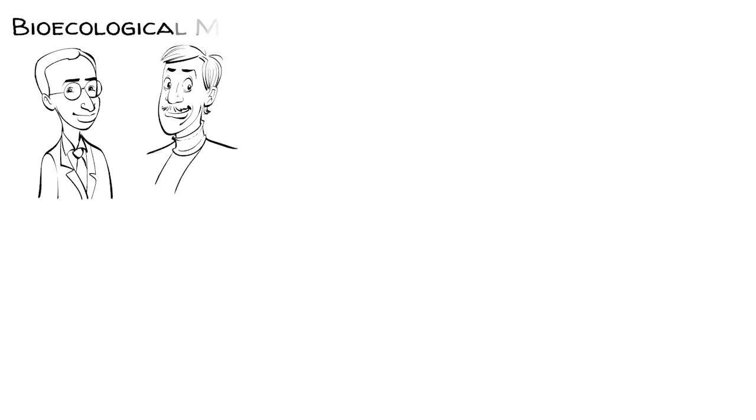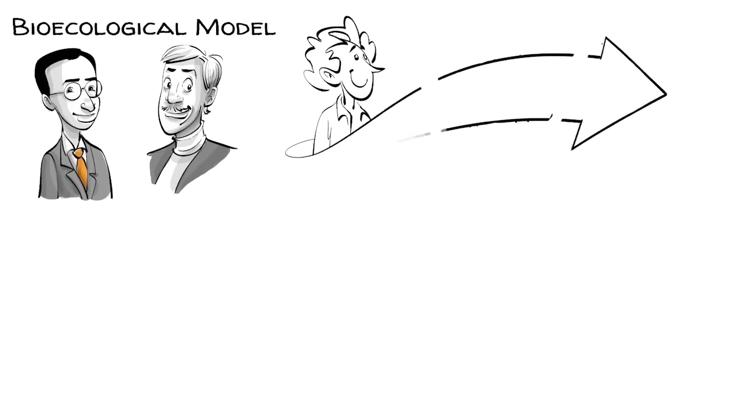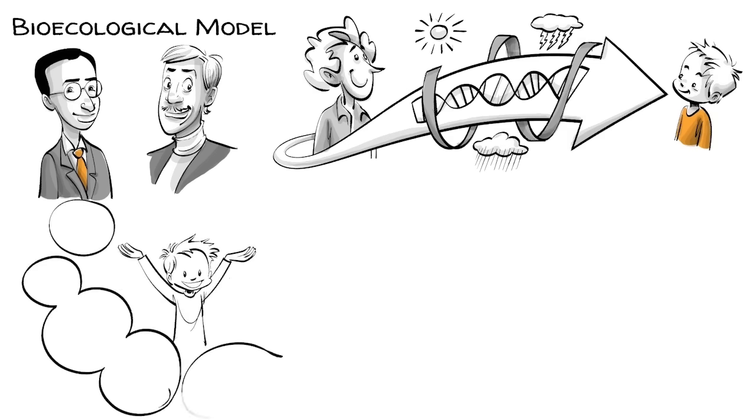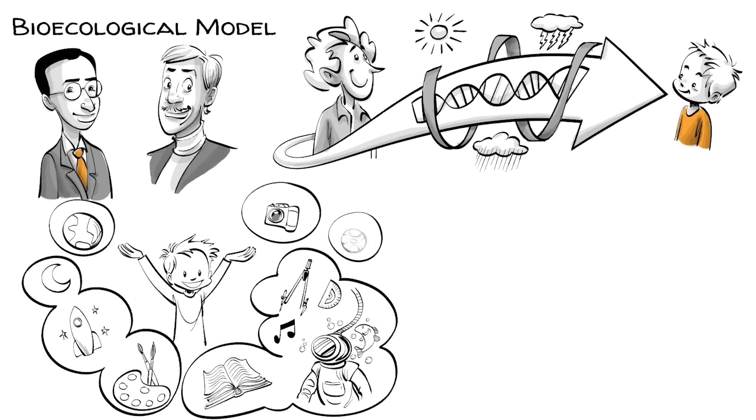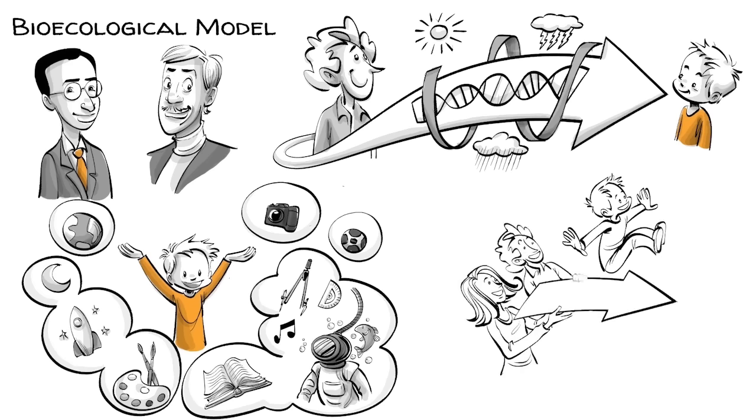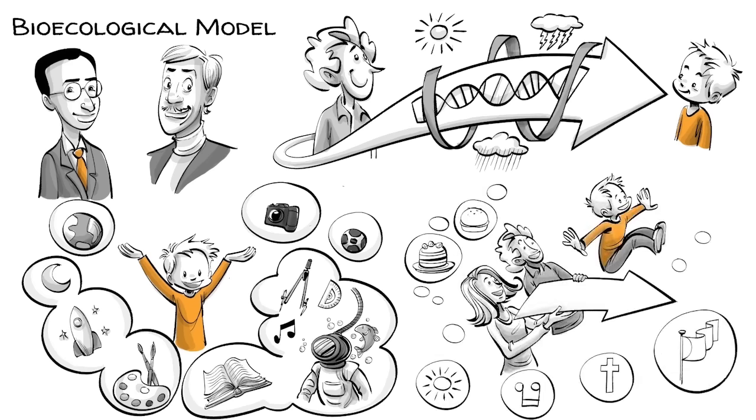Decades later, Bronfenbrenner and Steven Ceci proposed an extension of this theory, called the Bioecological Model. This new model recognizes gene-environment interactions and acknowledges the role of heritability, but adds that genes themselves are under the influence of the environment. In other words, the process of heritability varies in a magnitude of potentials. How much a child can make of the potential they inherit depends on the ecological environment.